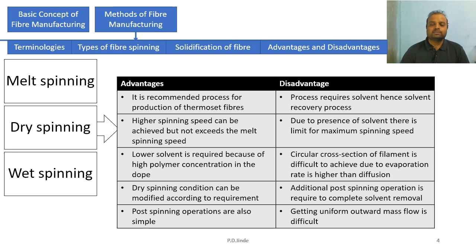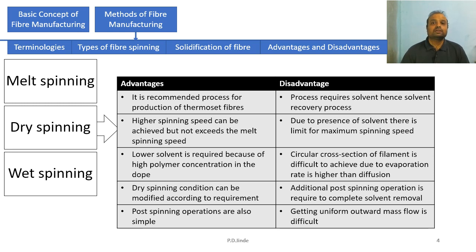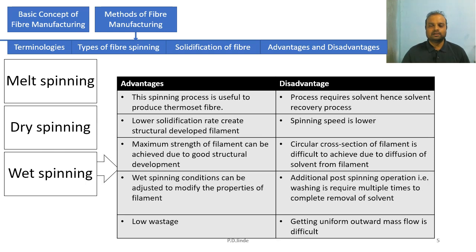The last disadvantage of dry spinning is that getting uniform outward mass flow is very difficult. Solidification takes place via one-way heat transfer and outward mass transfer, but achieving complete and uniform mass transfer from the polymer is difficult, which is why a post-operation washing step is needed.